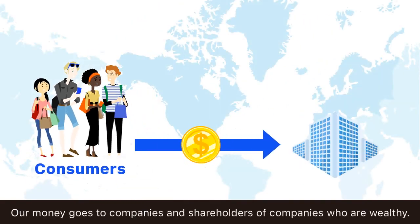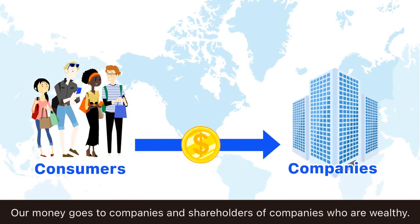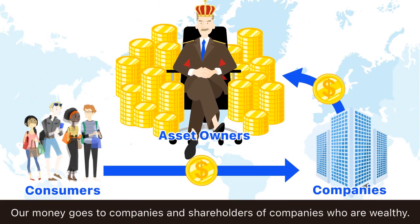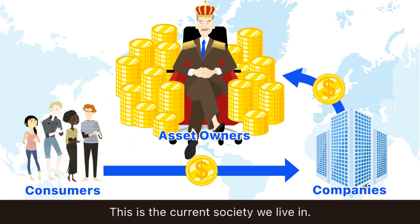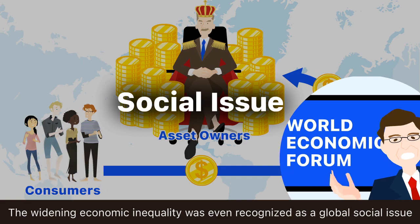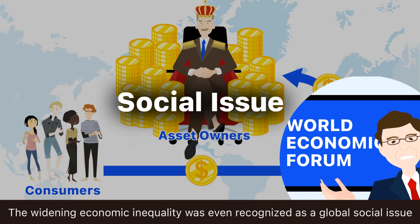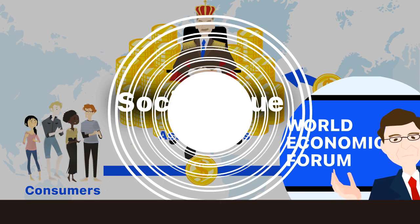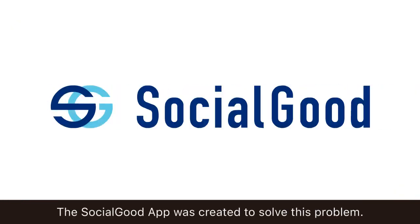Our money goes to companies and shareholders of companies who are wealthy. This is the current society we live in. The widening economic inequality was even recognized as a global social issue at the World Economic Forum. The Social Good App was created to solve this problem.